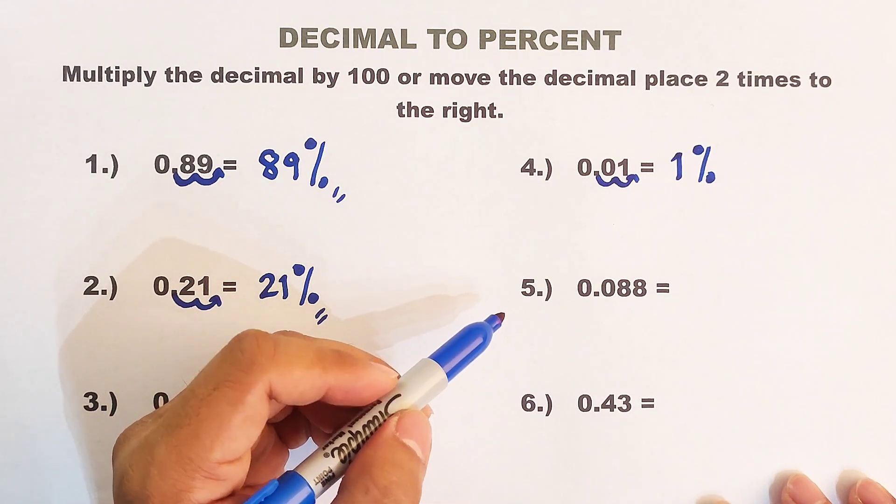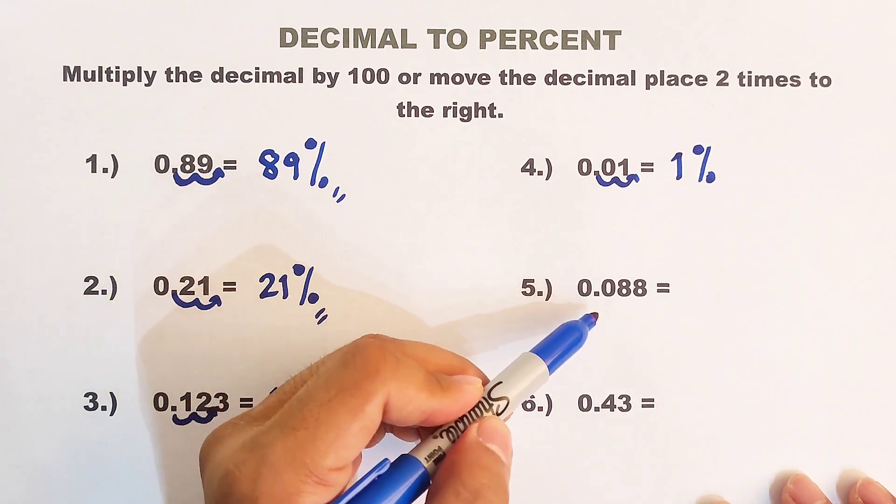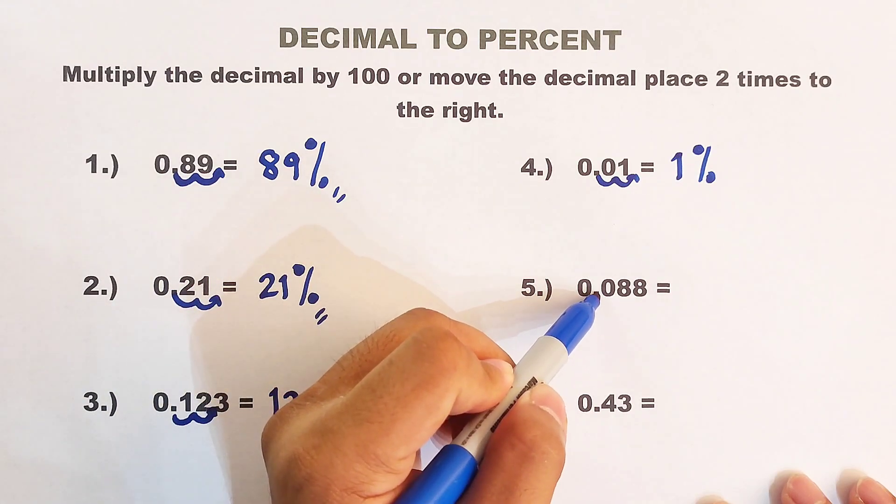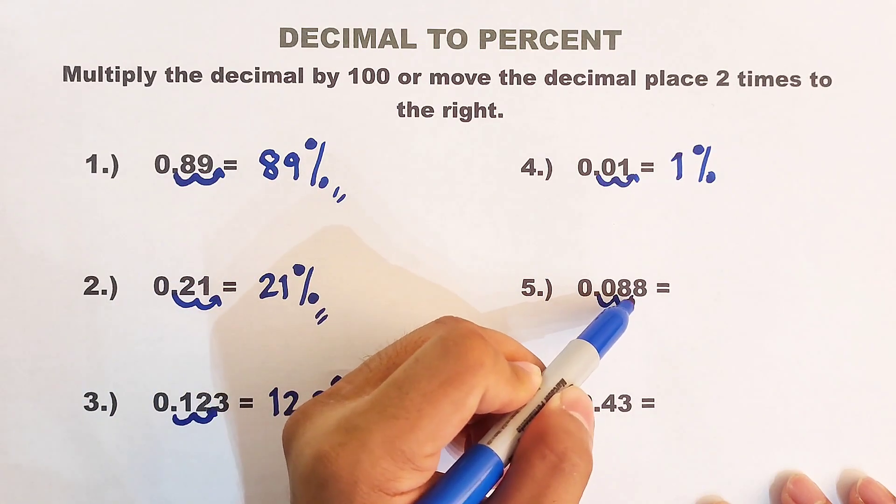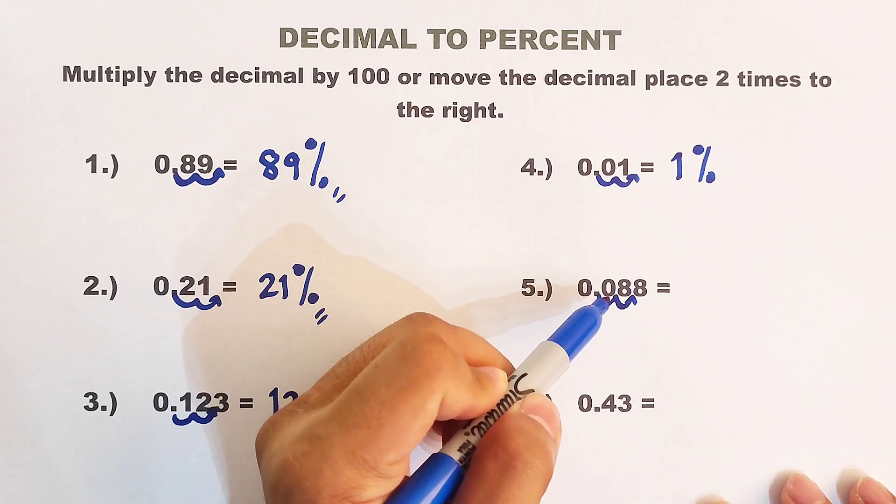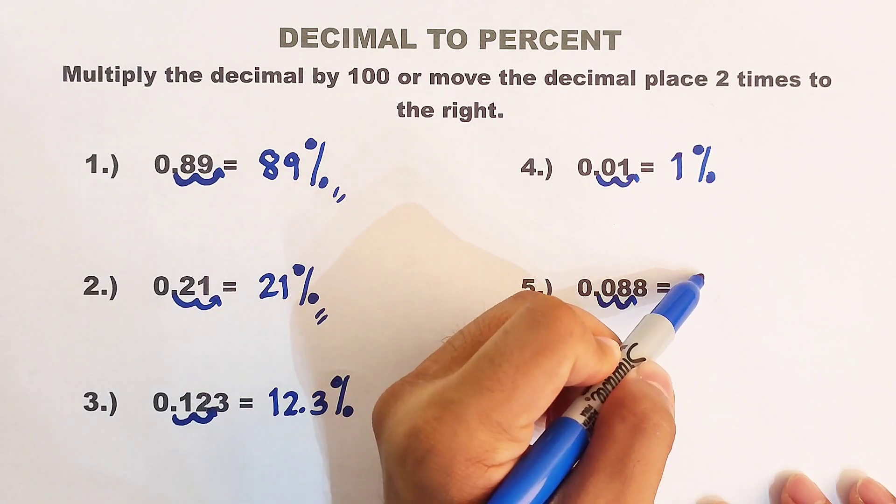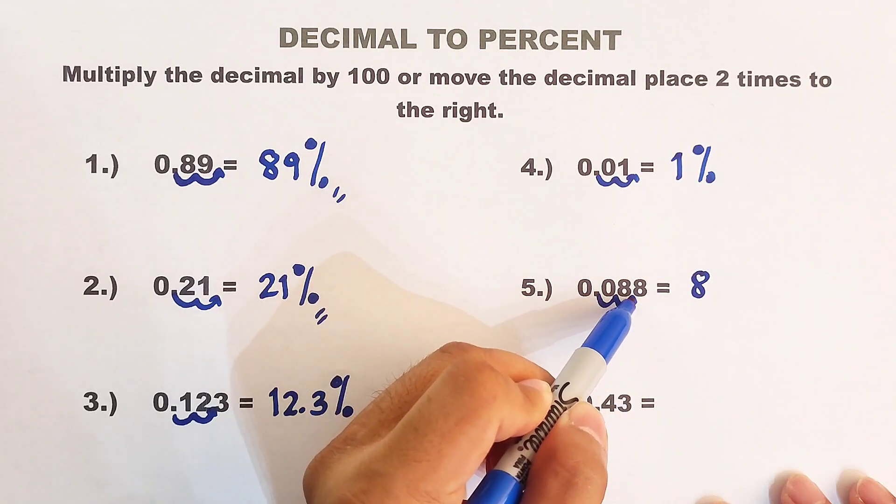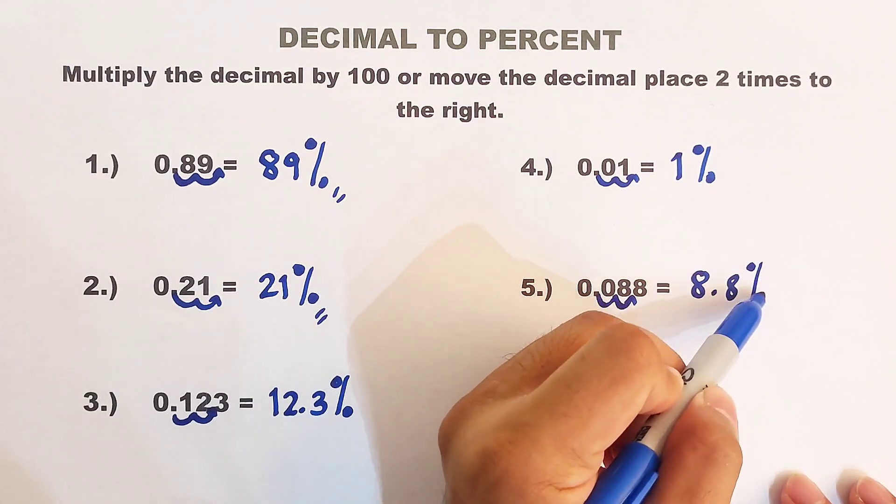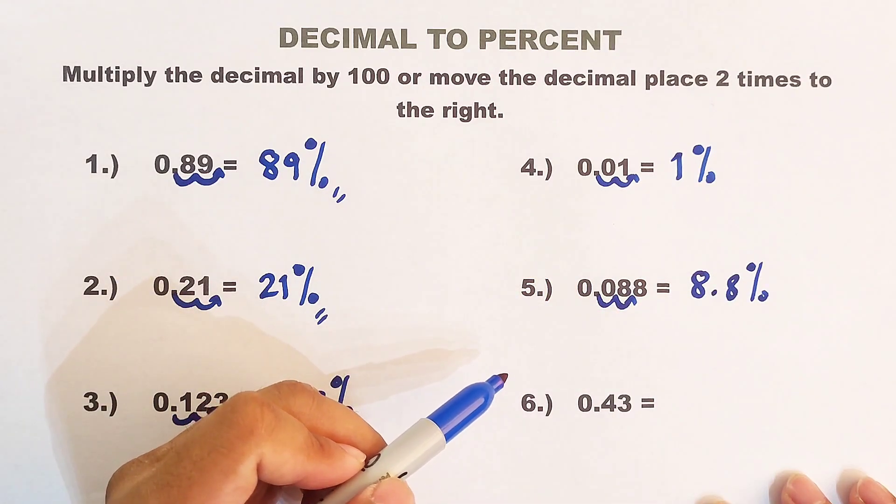Let's move on with item number 5. For number 5, we have 0.088. We have to move this decimal 1 and 2. So as you can see, we have 0 here in front. So we will disregard this. We will just copy 8. And it stops here. 8.8%. Look at that.